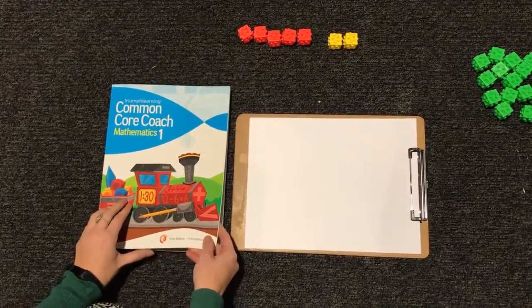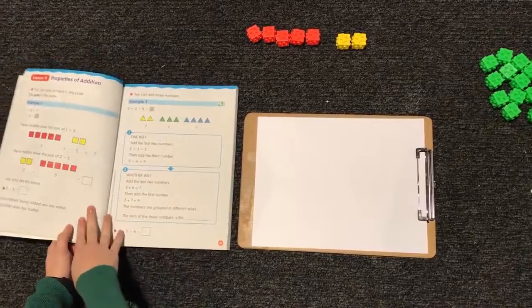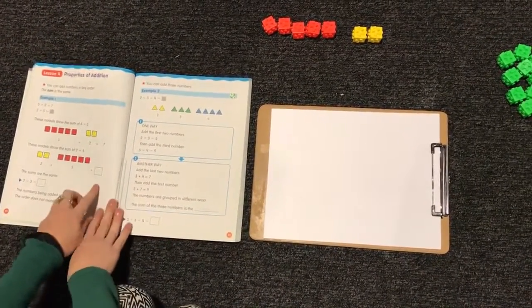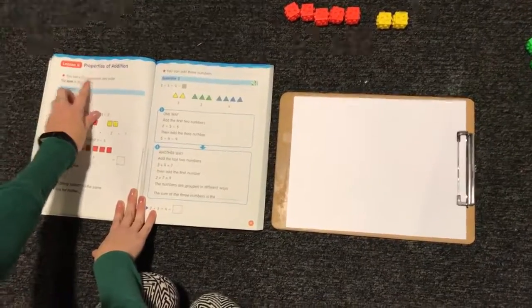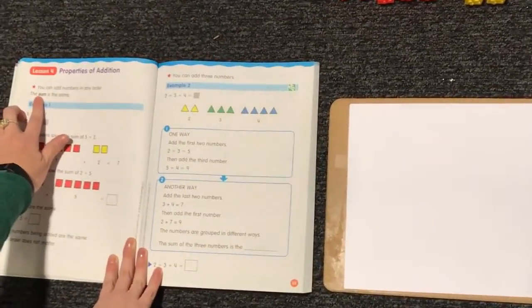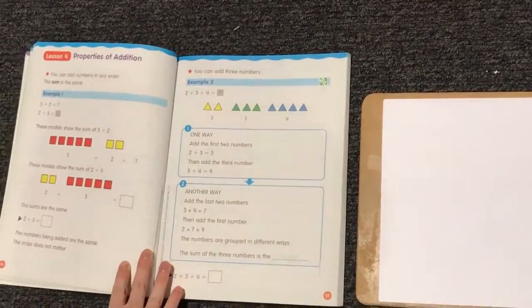All right, boys and girls, we're going to take out our math book and turn to page 24 and start lesson 4. Today, we are going to add numbers in any order, and the sum, or answer, is going to be the same.